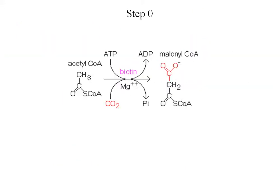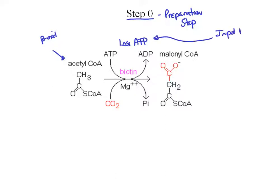Your book calls it a preliminary step, but I think it should be step zero — a preparation step. Here's our acetyl coenzyme A. What's happening in this reaction? We lose an ATP, so again we have to input energy. This is an anabolic process — we should expect to put energy in because we're taking oxidized carbons and making reduced carbons. Notice we add a CO₂ to the molecule, going from something with two carbons to something with three carbons. That's the important part of this preparation step.